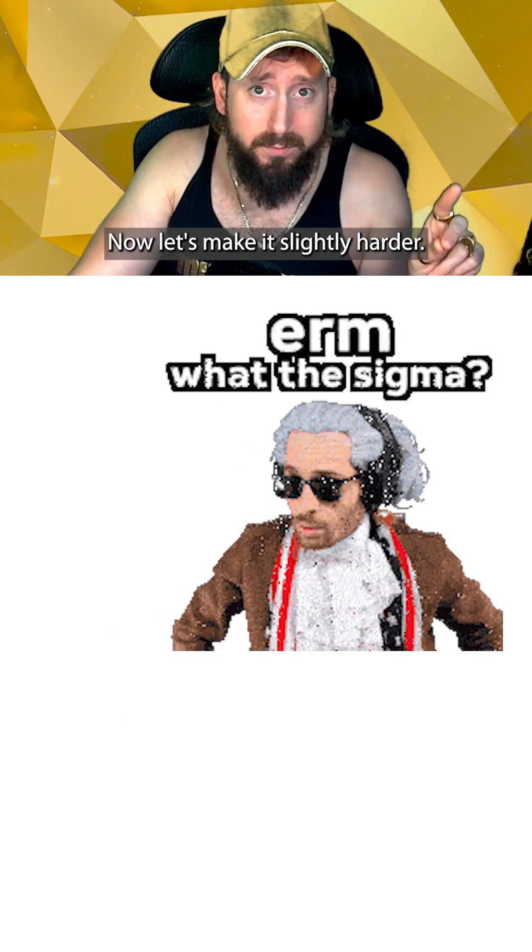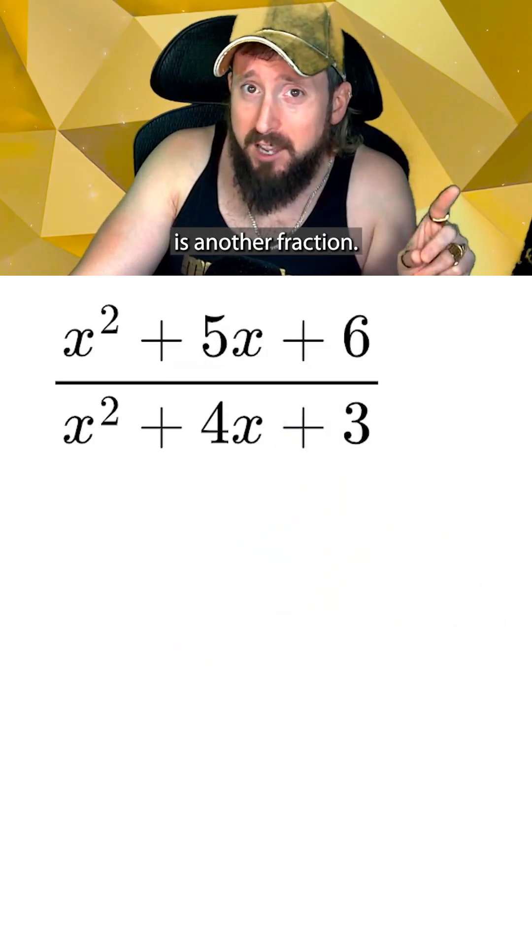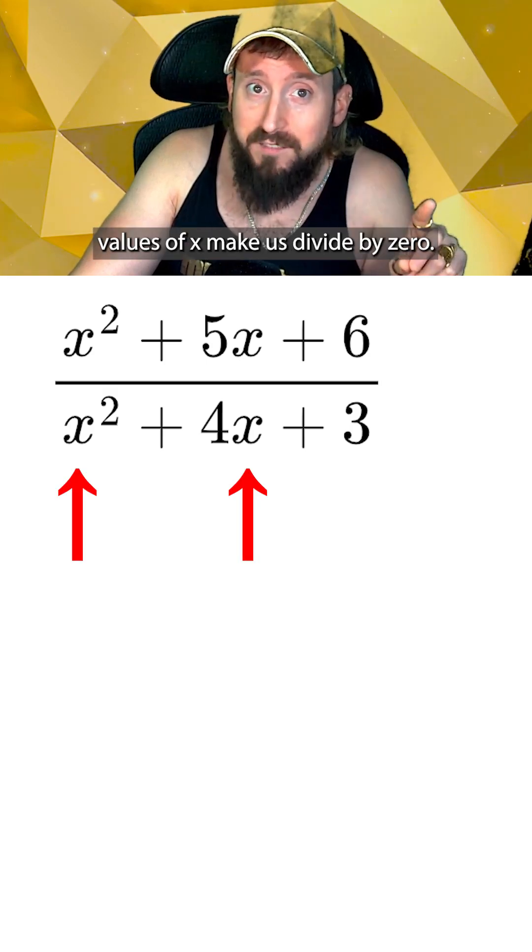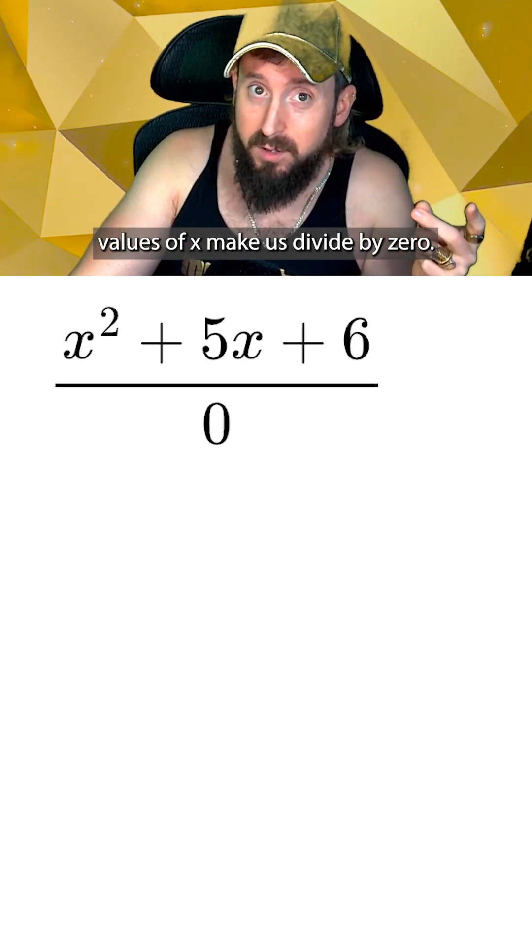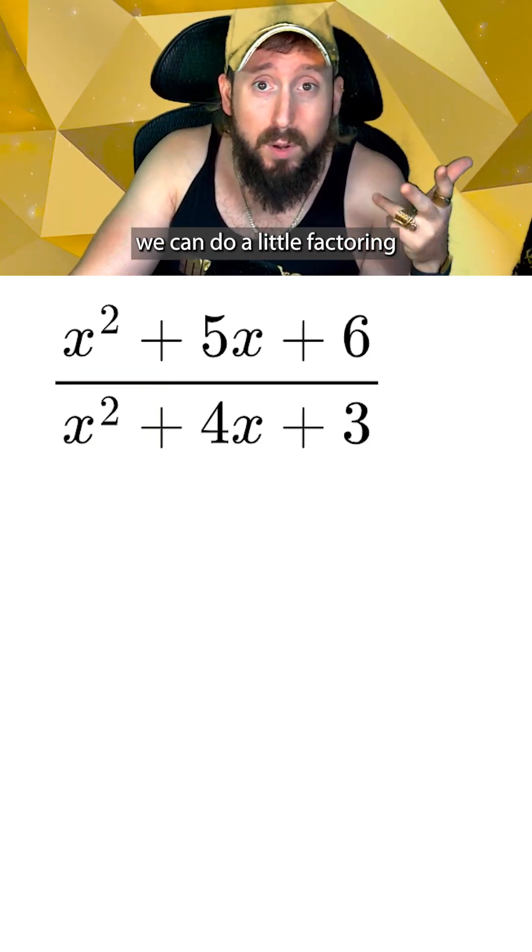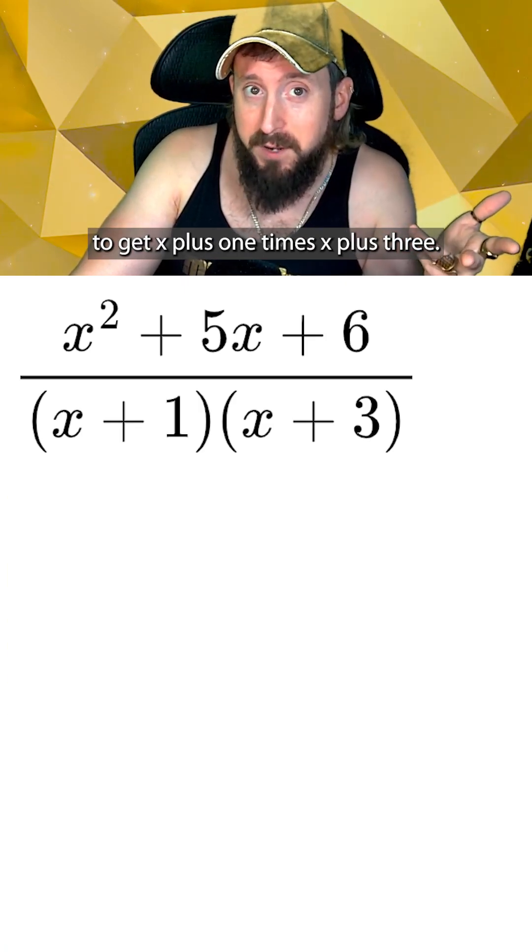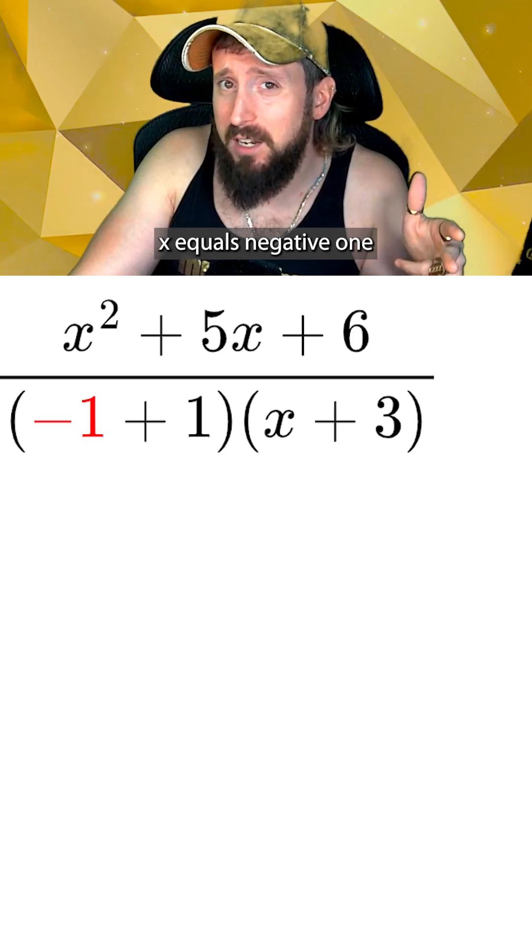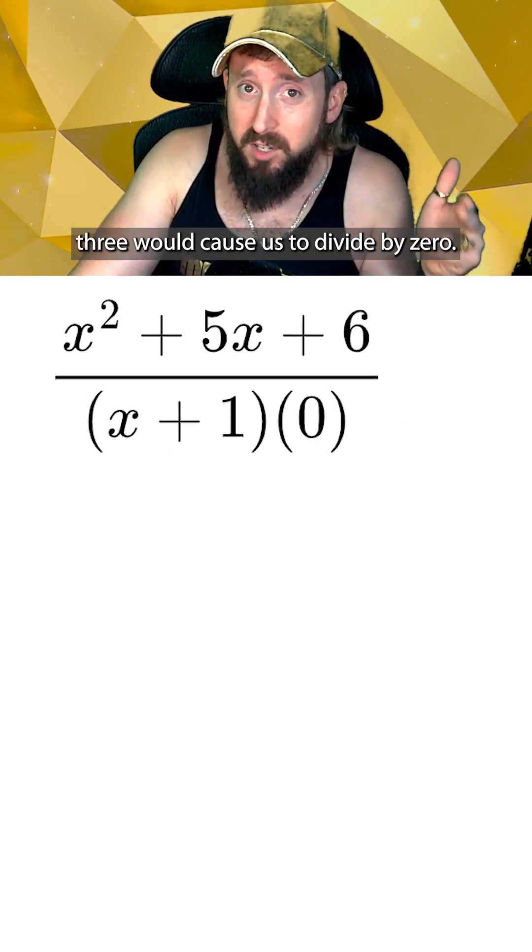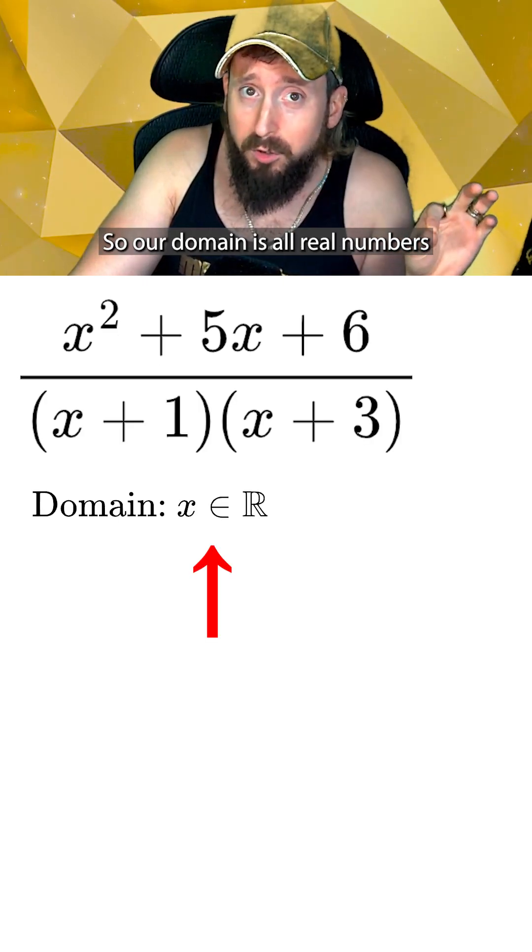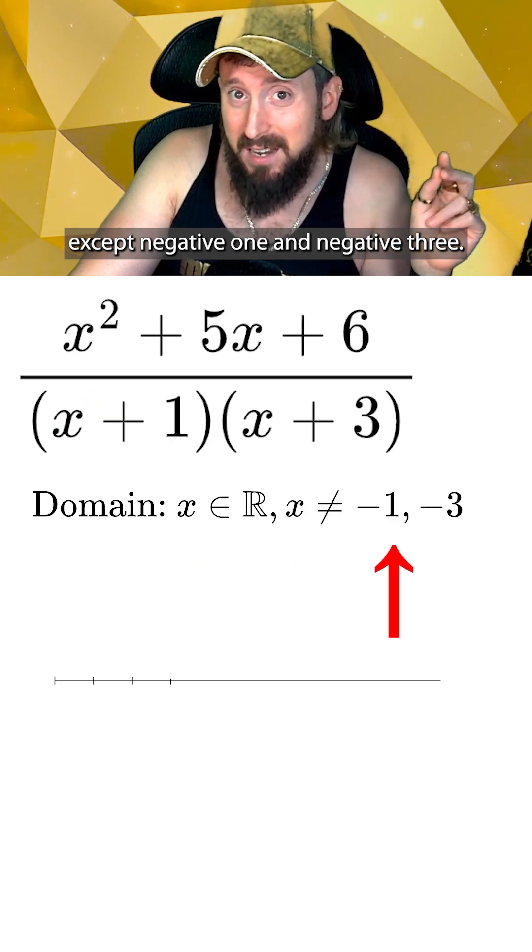Now let's make it slightly harder. Here we see that the function is another fraction, so we're going to want to check the denominator to see what values of x make us divide by zero. Since this is a quadratic, we can do a little factoring on the bottom to get x plus 1 times x plus 3. This means that either x equals negative 1 or x equals negative 3 would cause us to divide by zero, so our domain is all real numbers except negative 1 and negative 3.